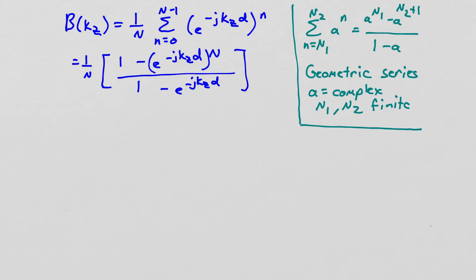So we can sum from n1 to n2 of a to the n, where a is a generic complex number, and that's what the summation is equal to. n1 and n2 are finite integers, any finite integers. So I've used that finite sum of a geometric series over here to get the beam pattern. I have the beam pattern in this form just using this formula.